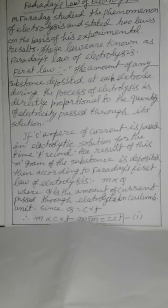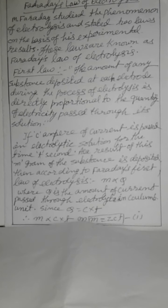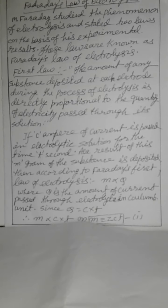First Law: The amount of any substance deposited at each electrode during the process of electrolysis is directly proportional to the quantity of electricity passed through its solution. If C ampere of current is passed in electrolytic solution for time t seconds, and as a result m grams of substance is deposited, then according to Faraday's Law of Electrolysis: